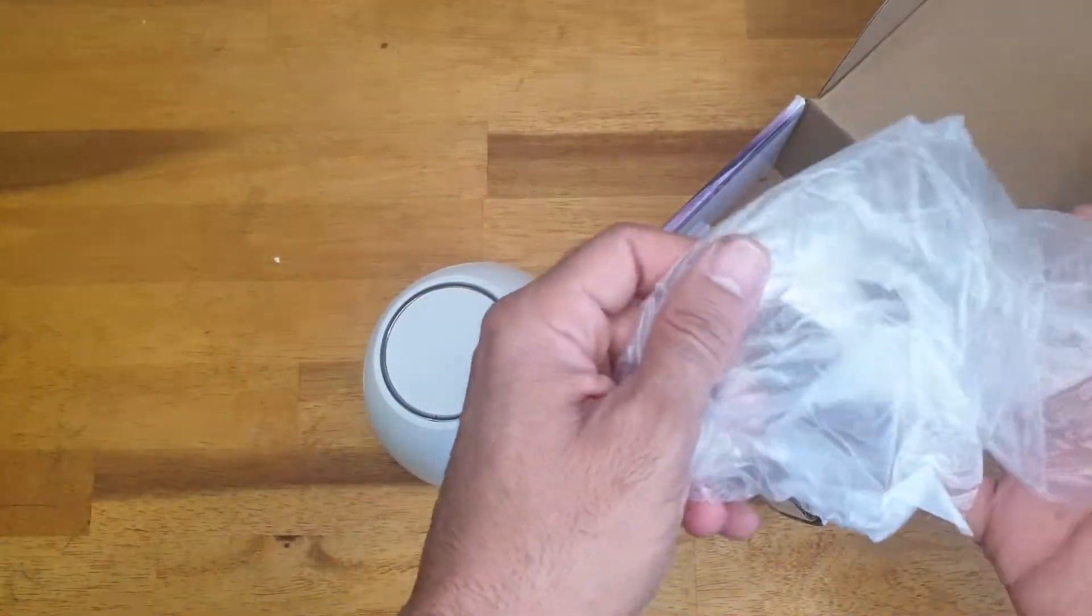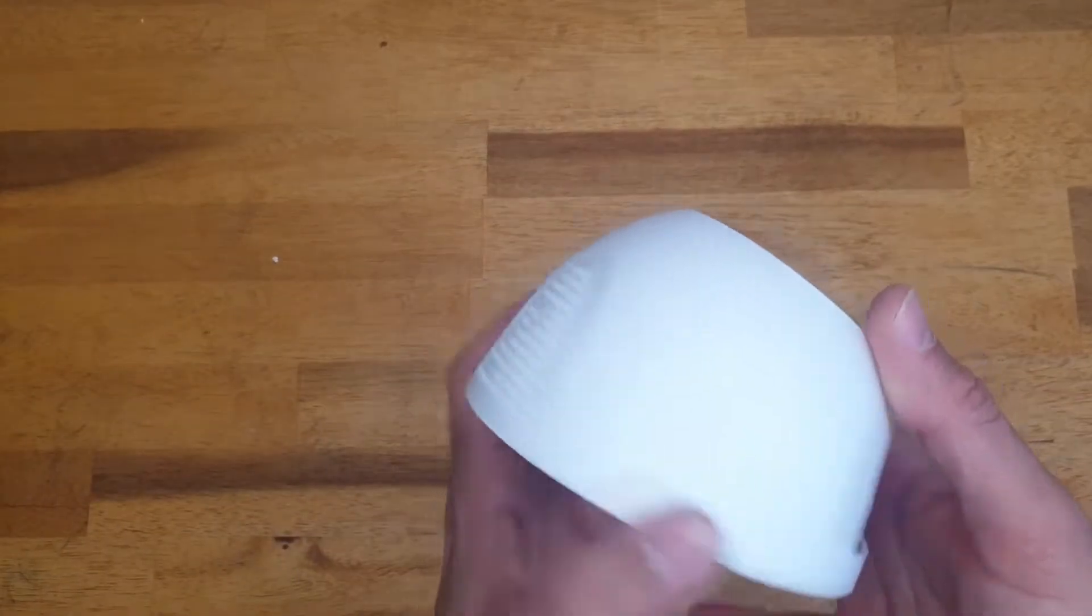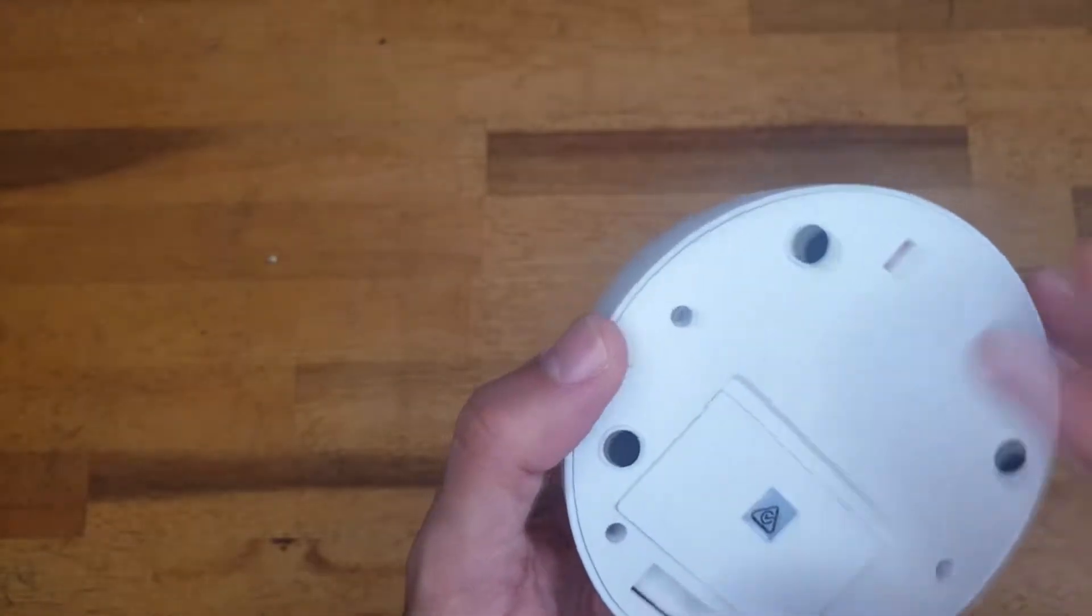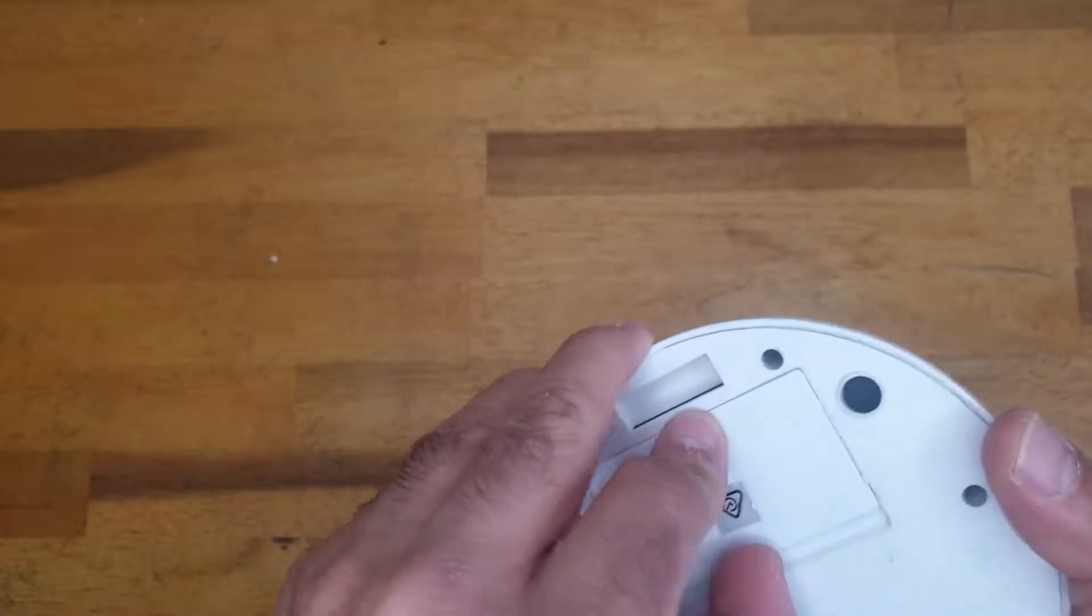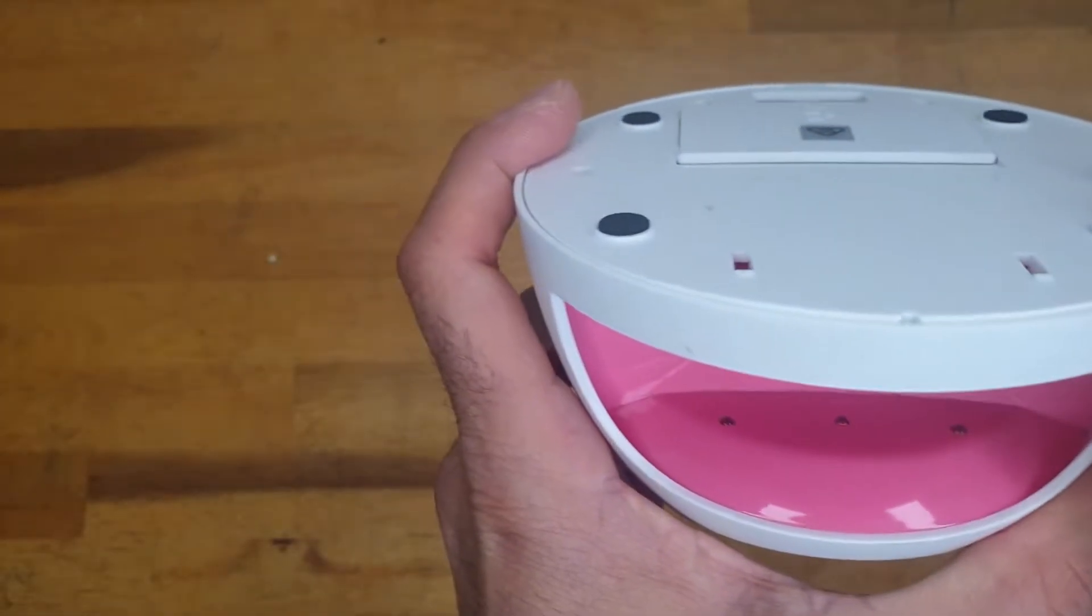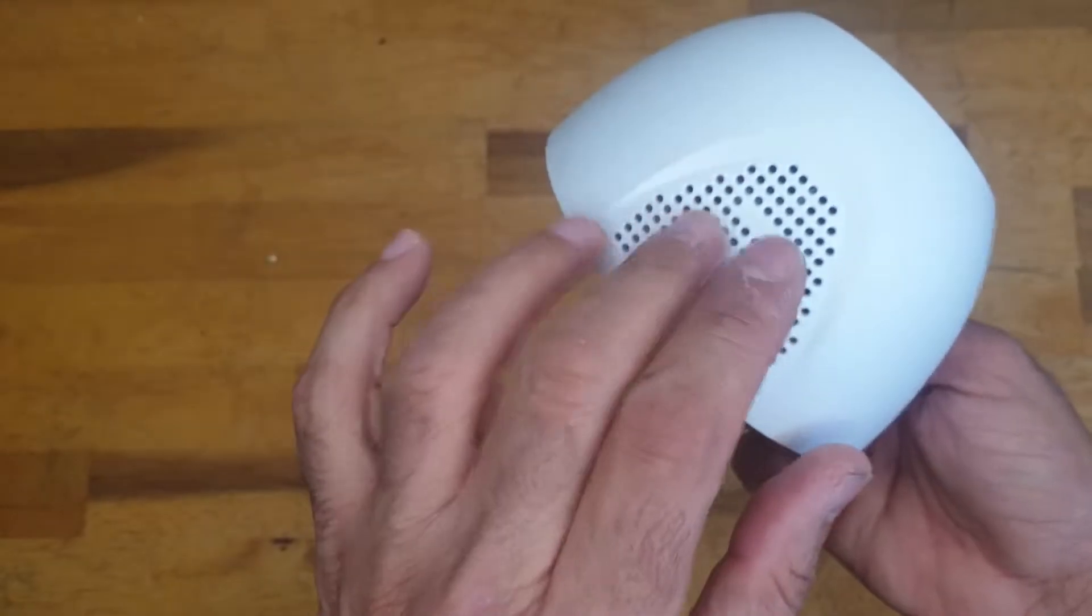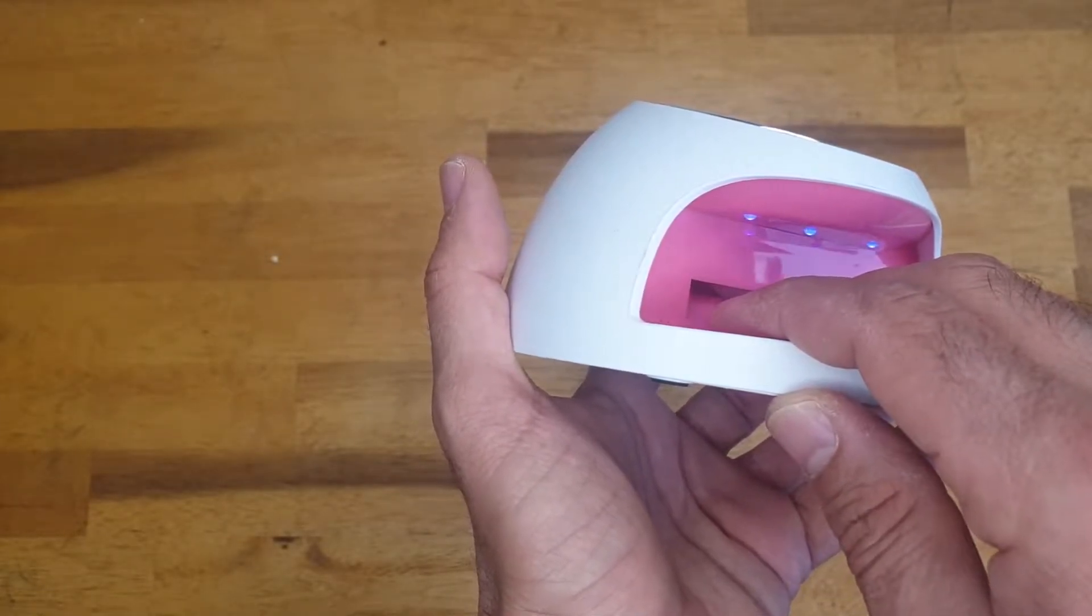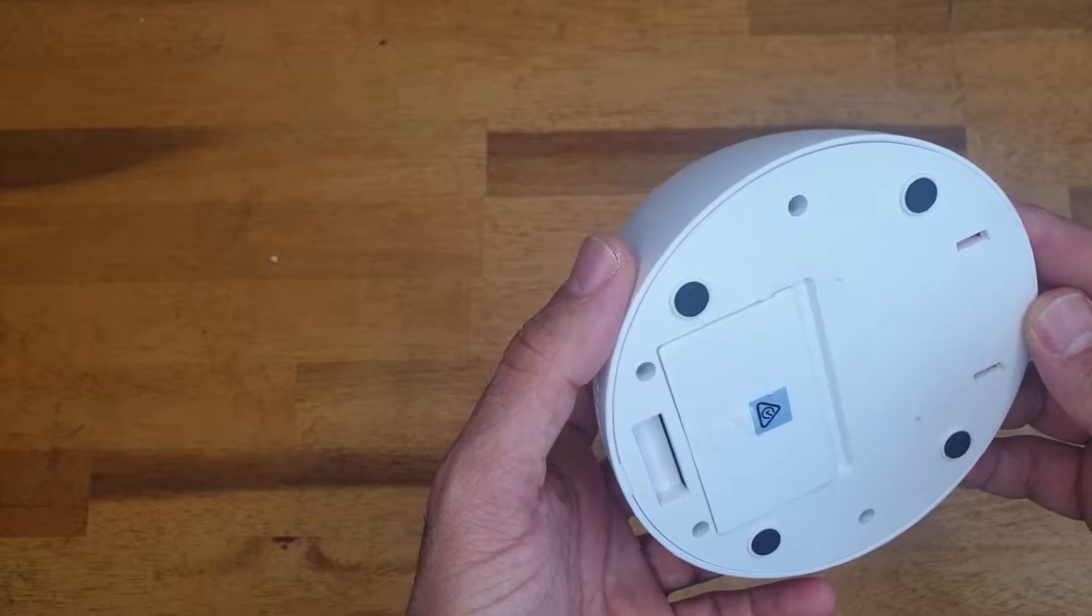This is the bag, no instruction. You don't need instruction, so this is it. Battery compartment here, it came with batteries. Just a simple three UV LEDs here and the fan that sucks air from this side and blows from this hole. So you put your fingers, just use this thing.